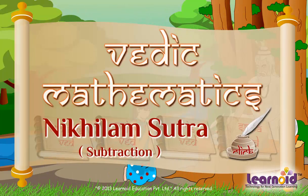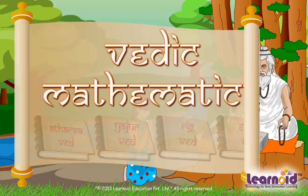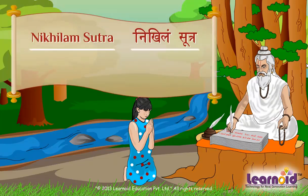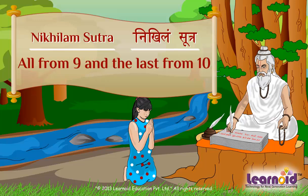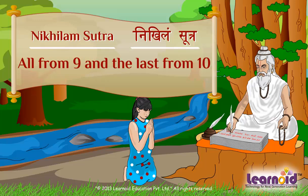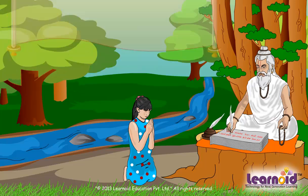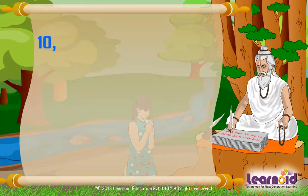Nikhilam Sutra states: all from 9, last from 10. This rule is used to find the deficiency in a number to the nearest base. 10, 100, 1000 are bases of 2, 3, 4 digits and so on.